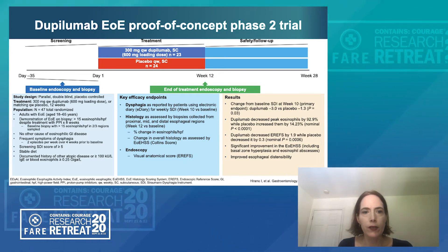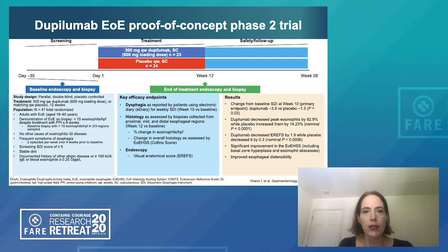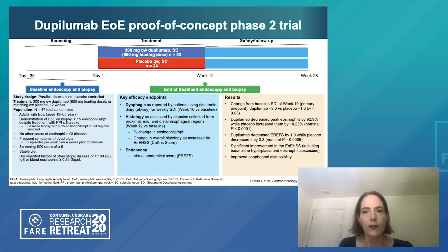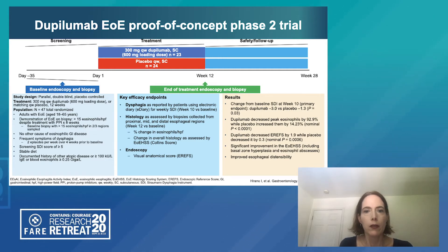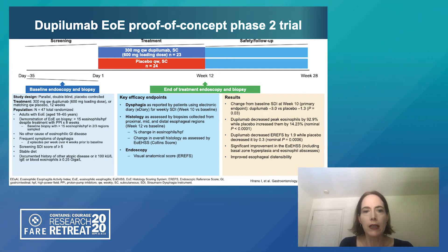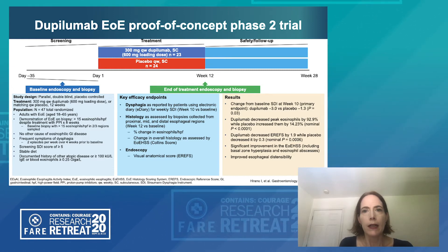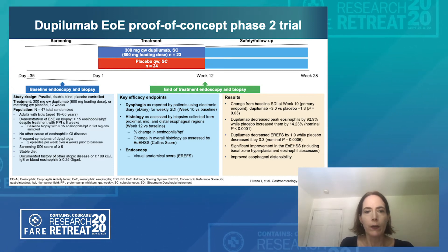The primary efficacy endpoint was the Straumann Dysphagia Index PRO for dysphagia with respect to change from baseline to week 10. Secondary endpoints included histologic measures of type 2 inflammation, EREFS scores looking anatomically at changes in the esophagus, distensibility measures, and additional patient-reported outcomes.